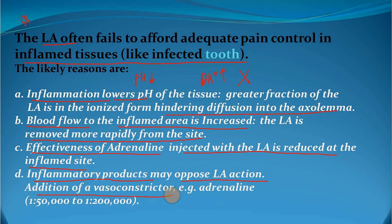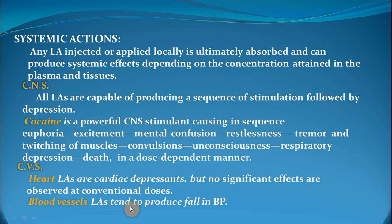Addition of vasoconstrictors — for example, adrenalin — is added in a ratio of 1:50,000 to 1:200,000.